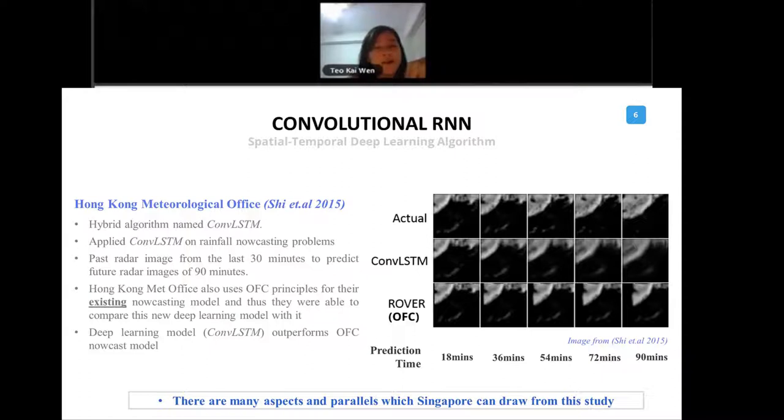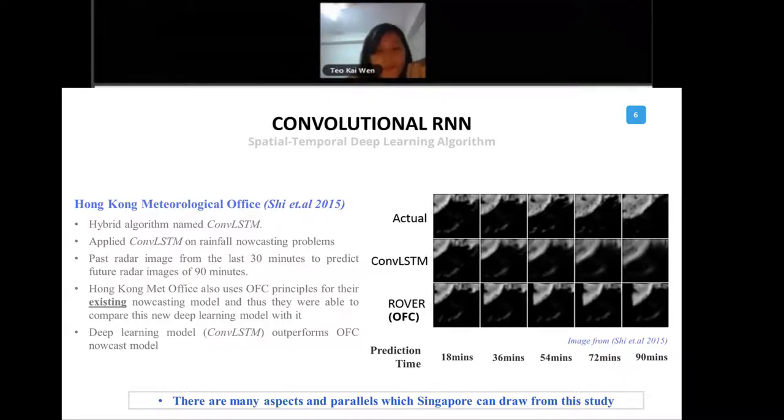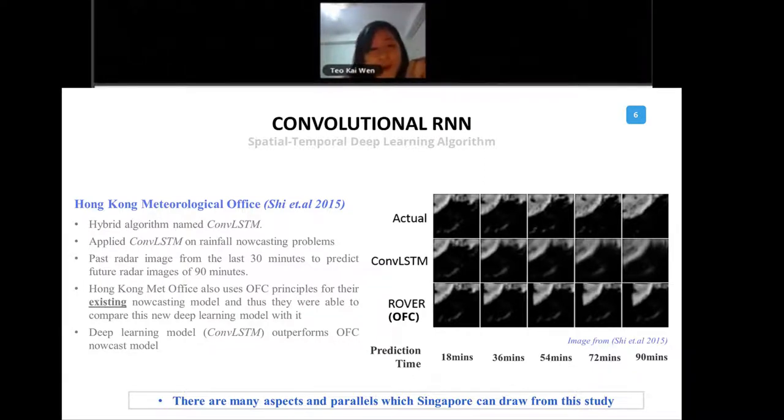In 2015, a group of Hong Kong Met Office researchers, they tried to combine the convolutional neural network with the recurrent neural network. It adopts the best of both worlds, image recognition features, and then with spatial and temporal prediction for the recurrent neural network. It combines these two algorithms. This hybrid algorithm is called the ConvLSTM, and they apply this ConvLSTM on rainfall nowcasting problems. What they did was they use past radar images, and then they predict future radar images of the next 90 minutes.